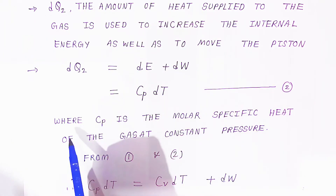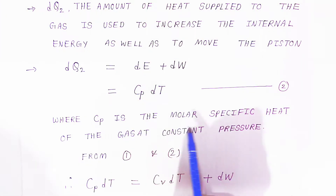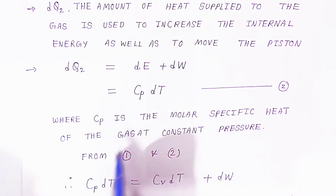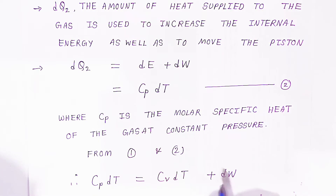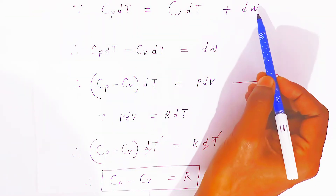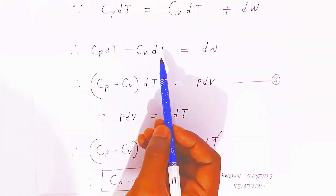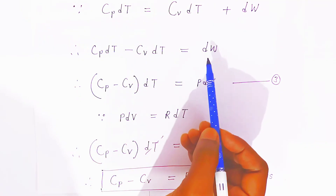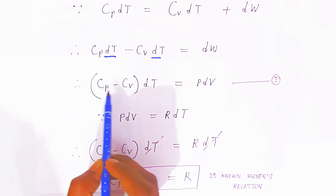From equations one and two, where Cp is the molar specific heat at constant pressure, comparing gives us Cp·dT = Cv·dT + dW. Moving terms to one side: Cp·dT − Cv·dT = dW, and taking dT common: (Cp − Cv)·dT = dW.